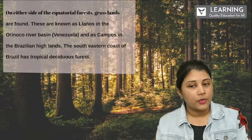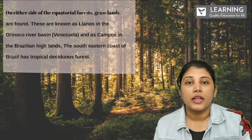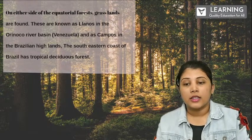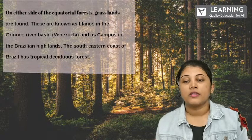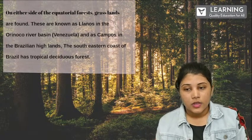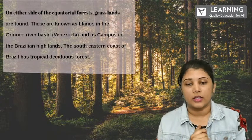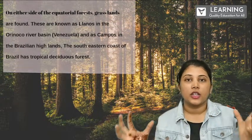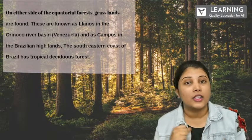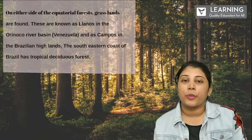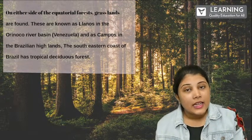On either side of the equatorial forest, grasslands are found. These are known as Llanos, on the Orinoco River basin in Venezuela. In the Brazilian highlands, the southeastern coast of Brazil has tropical deciduous forest — a dense jungle. Because of the equatorial region, lots of rainfall produces huge forests where you could easily get lost. People staying nearby those forests need to be well-prepared to identify those locations and surrounding areas.